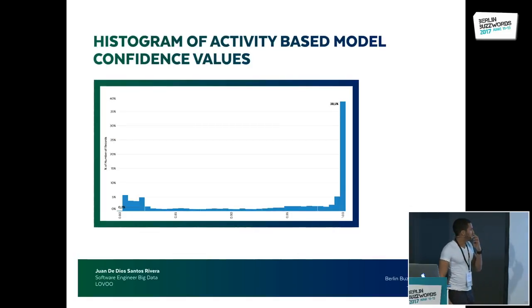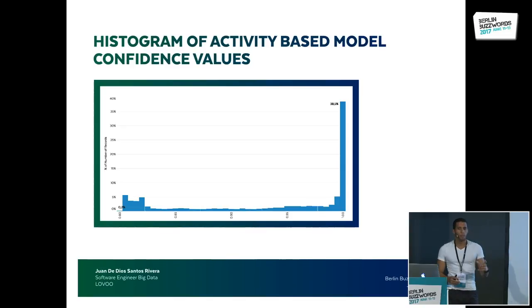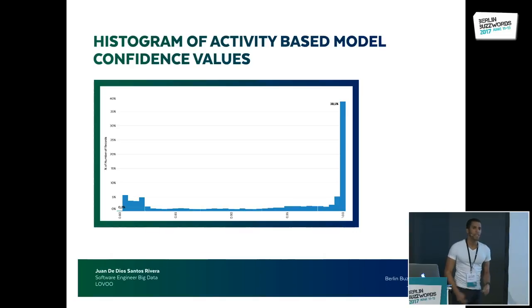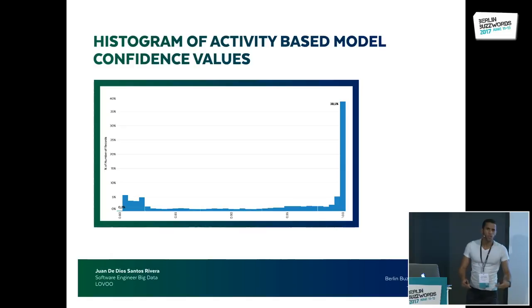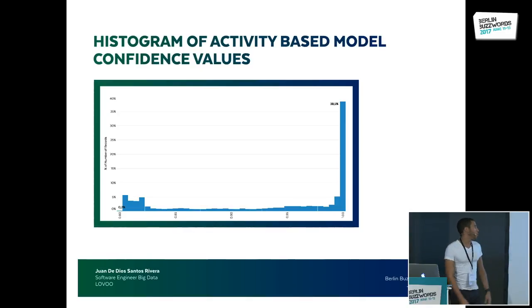The last graph is a histogram of the confidence values from the activity-based model. Rather than simply labeling you as spammer or hammer, the model gives a confidence score for how certain it is that you're a spammer. We then apply some post-processing to make the final decision. The cool thing is that the values are either 'not so sure' or 'really, really sure' — so we're guessing we're doing quite the right thing.